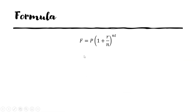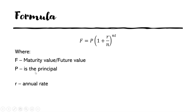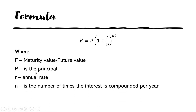The formula for finding the future value for compound interest compounded more than once a year is: F equals P times (1 plus R over N) raised to N times T — where F is the maturity value, P is the principal, R is the annual rate, N is the number of times the interest is compounded per year, and T is the time in years.